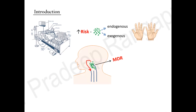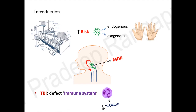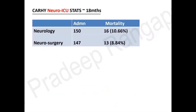Any patient in hospital or ICU connected to tubes tends to get colonized in the aerodigestive tract with multi-drug resistant organisms within 48 hours, if the ICU harbors MDR bugs. These organisms get aspirated into the airway, eventually leading to nosocomial pneumonia, hospital-acquired pneumonia, or ventilator-associated pneumonia. In traumatic brain injury specifically, there is an innate immune defect — reduced superoxide production by neutrophils and reduced immunoglobulin production by lymphocytes.